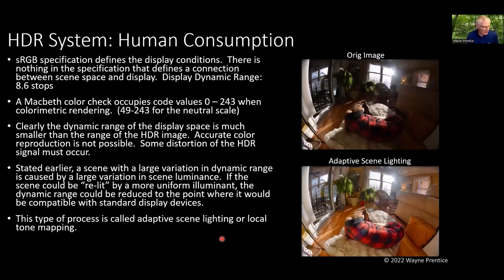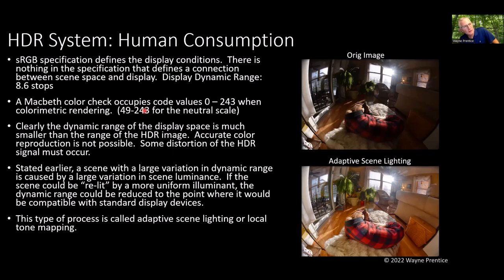Remember the claim: I want an HDR image with no loss of color fidelity throughout the entire tone scale. That's impossible. The sRGB specification defines a display condition, not the capture condition. An sRGB display device has 8.6 stops of dynamic range. If I take a Macbeth color checker and do a perfect colorimetric rendering that occupies 0 to 243 of the sRGB 8-bit space, the neutral scale runs from 20 to 243. How am I going to get 20 stops of dynamic range onto an sRGB image without any loss of color fidelity? Clearly you can't.